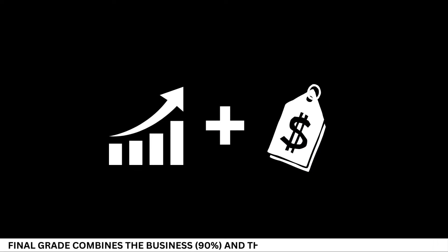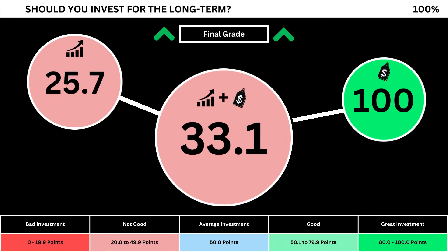Finally, we can put everything together to get the company's final grade. Adding the business grade and the fair price grade, we can see the company's final grade. Anything less than 50 means it's not a good long-term investment. A final grade above 50 means it would make a good long-term investment if you bought the stock right now. So what are your thoughts? Are you going to invest? Invest wisely and as always, take care of your money.